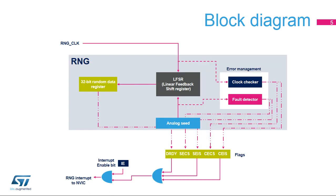This simplified block diagram of the RNG shows its basic functional and control modules. The random number generator is based on an analog circuit made of several ring oscillators whose outputs are XOR'd to generate the seeds that feed a linear feedback shift register in order to produce 32-bit random numbers. The linear feedback shift register is clocked by a dedicated RNG clock signal so that the quality of the random number is independent of the HCLK frequency. The contents of the linear feedback shift register are transferred into the data register when a significant number of seeds have been introduced into the LFSR register.